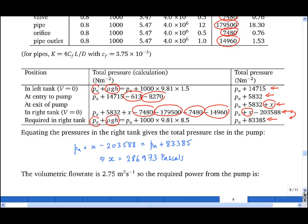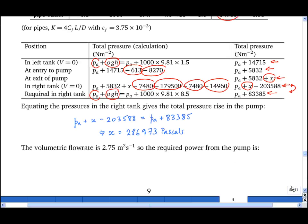And to get the required power from the pump, we multiply this by the volumetric flow rate, 2.75 meters cubed per second times 286,973 pascals, which is a newton per meter squared. And that gives us 789.2 kilowatts.